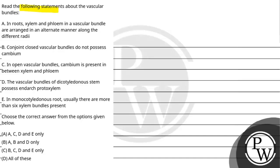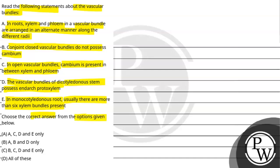So let's read the question. The question says: read the following statements about the vascular bundles. First statement: in roots, xylem and phloem in a vascular bundle are arranged in an alternate manner along the different radii. Second: conjoint closed vascular bundles do not possess cambium. Third: in open vascular bundles, cambium is present between xylem and phloem. Fourth: the vascular bundles of dicot stems possess endarch protoxylem. And in monocot roots, usually there are more than six xylem bundles present. So we have to choose the correct answer from the options given below.